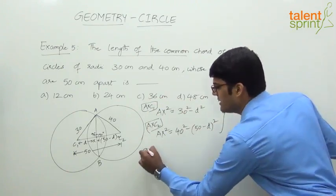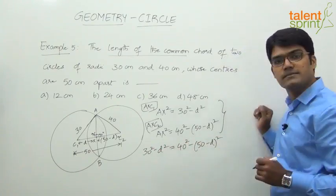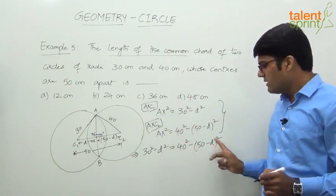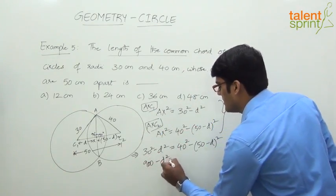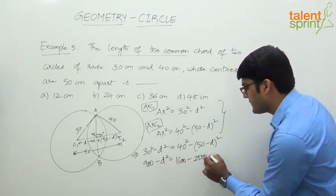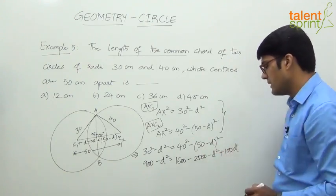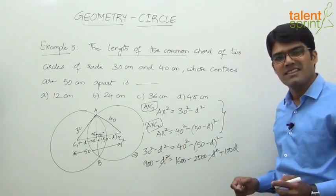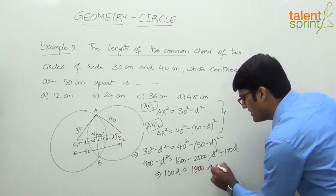Equating: 30 squared minus d squared equals 40 squared minus (50 minus d) whole squared. So 900 minus d squared equals 1600 minus (2500 minus 100d plus d squared). Expanding: 900 minus d squared equals 1600 minus 2500 plus 100d minus d squared. The d squared terms cancel. Then 1600 minus 2500 is minus 900, which moves to the other side as plus 900.